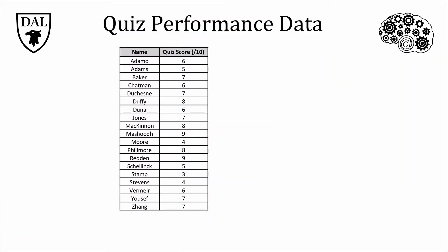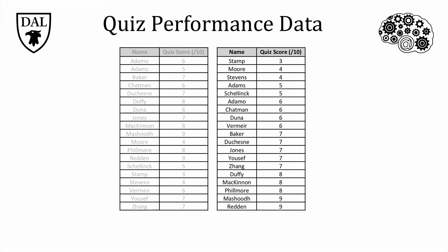Let's say we have 19 students in our class who have just finished a quiz, graded out of 10. Looking at this list of numbers isn't the most efficient way to figure out how these students did overall. We can see with a quick scan that Michoud and Redden got the highest marks and Stamp got the lowest. One way to get a better sense of quiz performance is to arrange the grades from lowest to highest rather than alphabetically. This gives us a clearer picture — for instance, we can see that quite a few students got 7 out of 10.